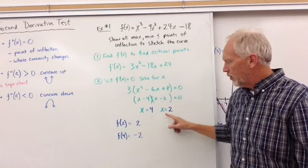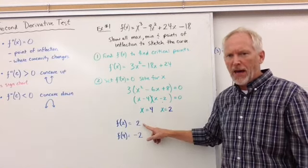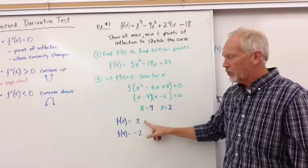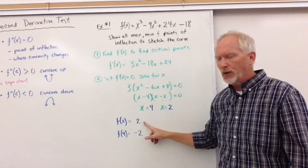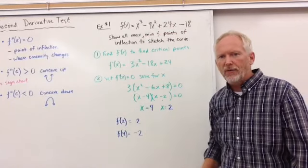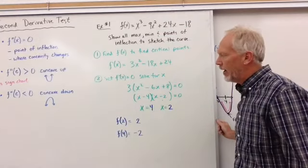So 2 and 4 are our x values. If we plug those back into the function, f of 2, if we go through that process, we will get a y value of 2. And f of 4, if we plug that in, we will get a y value of negative 2. All right, so what does the graph start to look like?